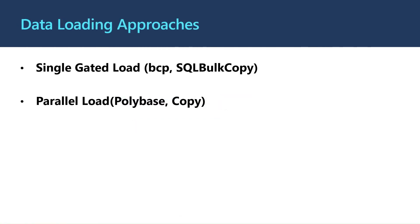There are two ways to load data into a dedicated SQL pool: single-gated load and parallel loading. In the single-gated load approach, all incoming connections and data movement go through the control node. Though you can run multiple data load operations via the control node to achieve parallelism, it will be constrained by the resources of the control node. Scaling the SQL data warehouse with more compute nodes will not help much in this case. You can consider this as a fallback when PolyBase can't be used. Bulk copy command-line operations or SQL bulk copy operations automatically go through the control node, so this approach is recommended only for very small data movements.